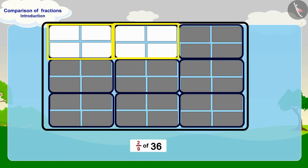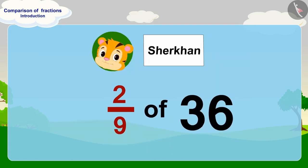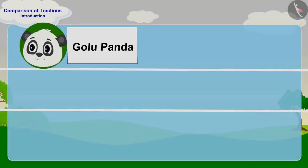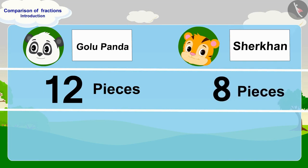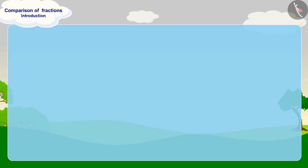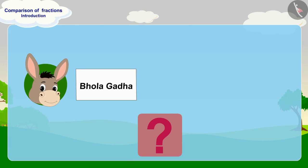Two ninth of 36 is eight pieces of paper. Shere Khan has written his name on a total of eight pieces. Golu has written his name on 12 pieces and Shere Khan on eight, so Golu has written his name on more pieces than Shere Khan. We can also see it this way: the fraction one third is bigger than two ninth.